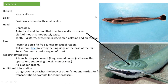The next fish is Echinus, another interesting type of fish. Its habitat is nearly all seas. The body is fusiform, meaning pointed at both ends, and covered with small scales. The head is depressed, compressed from dorsal and ventral sides. The anterior dorsal fin is modified into the form of an adhesive disc or sucker. The cleft of the mouth is moderately wide. Teeth are villiform, present in the jaws, vomer, palatine, and also on the tongue.